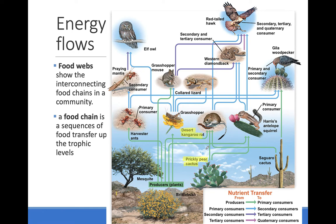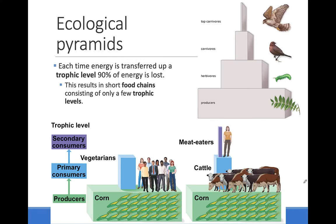The herbivore is eaten by a carnivore, the western diamondback, that is also eaten by a carnivore, the red-tailed hawk. The food web shows many different food chains. Food chains tend to be very short, typically not exceeding four trophic levels, because most of the energy is lost when it is transferred from one level to the next.